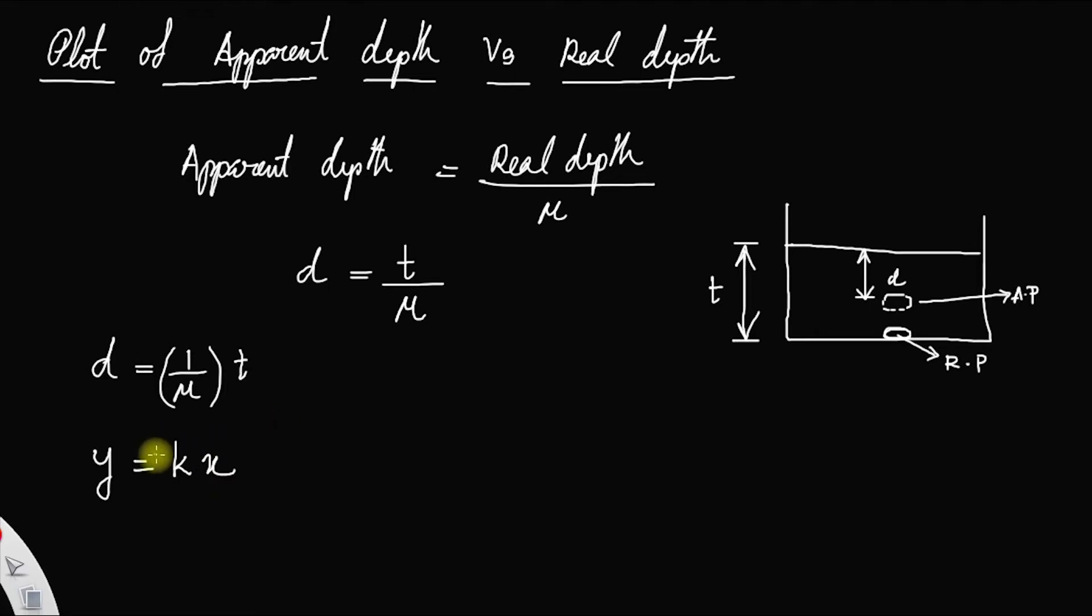The plot of this graph, the plot will be a straight line. You have x axis as t, the real depth t, and y axis as the apparent depth, small letter d, and you have a straight line.